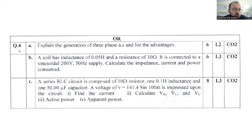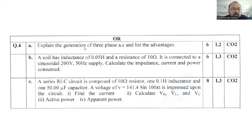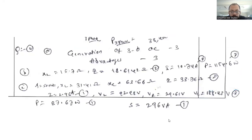From Module 2, one question had already been explained in the previous session. This is another set. Question number 4: explain the generation of three-phase AC and list out the advantages. So how do we generate the three-phase AC? You have to explain with Faraday's law.